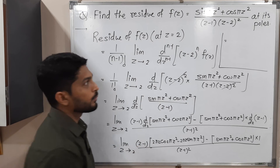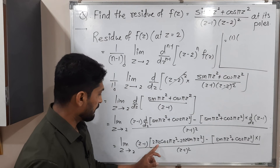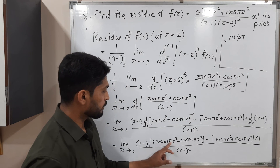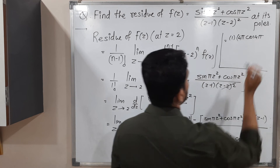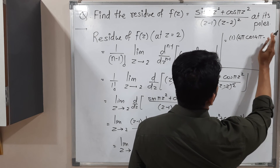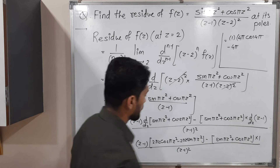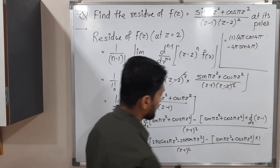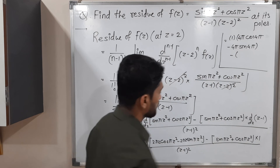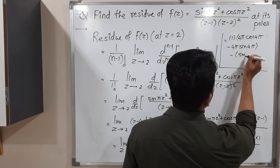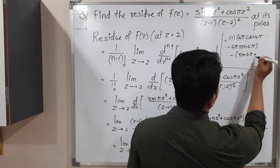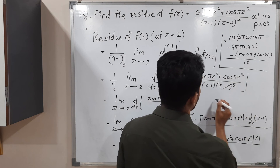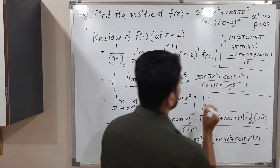Substituting z=2: (2−1) = 1 in the front. Inside the bracket, 2·2π = 4π; for cos(πz²) we get cos(4π); then −4π·sin(4π). Minus the bracket sin(4π) + cos(4π), times the derivative of (z−1) which is 1, divided by (2−1)² = 1.